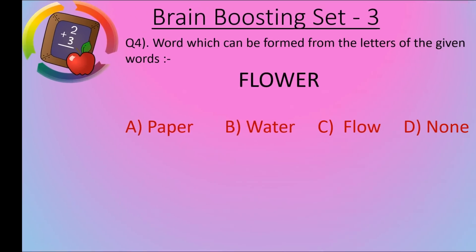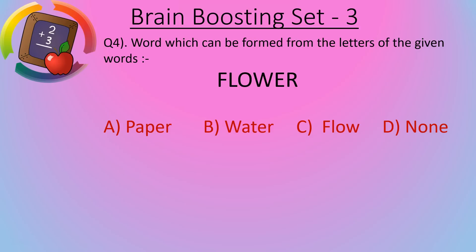Now question number 4. Question number 4 is word which can be formed from the letters of the given word. So our word is FLOWER. Now we want to know which word can be formed from these letters. So option A paper. Paper P. No, P is not present here. So paper cannot be formed.